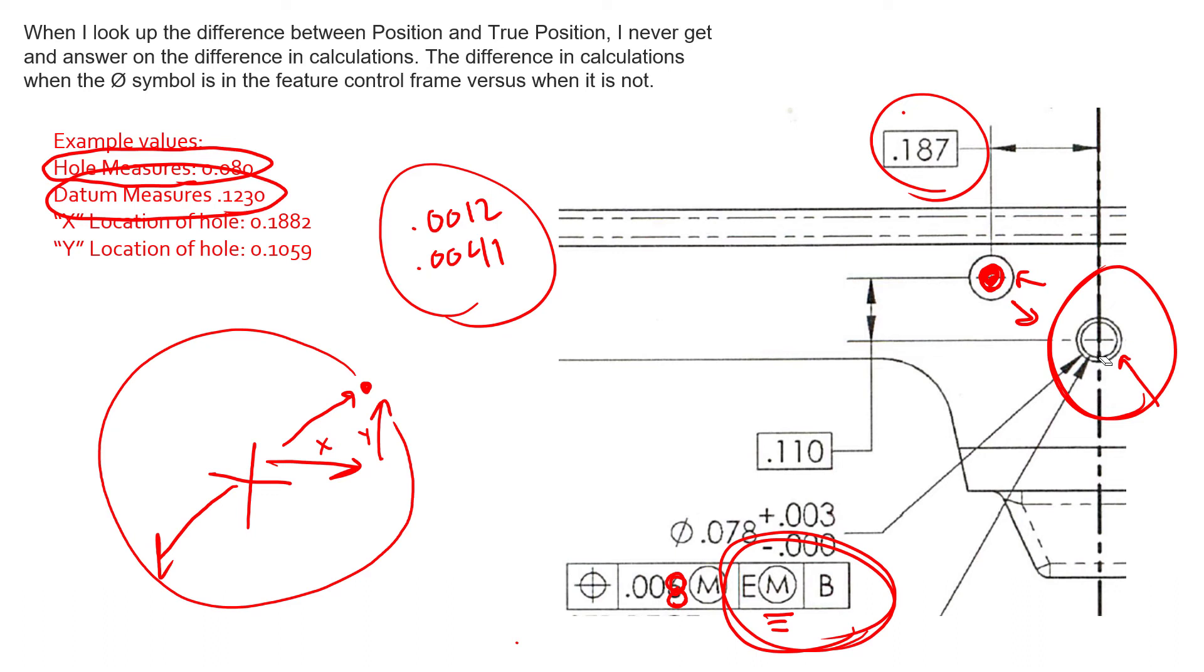So again, that is the high level answer. Again, to recap, 99.9% of the time I see a missing diameter symbol, it is because it's just simply a typo.